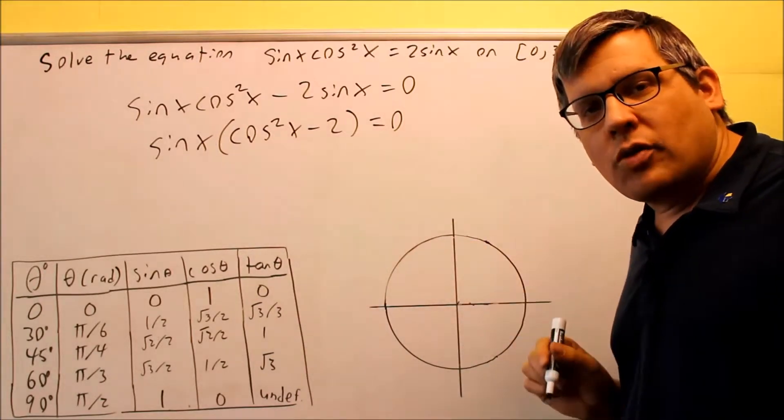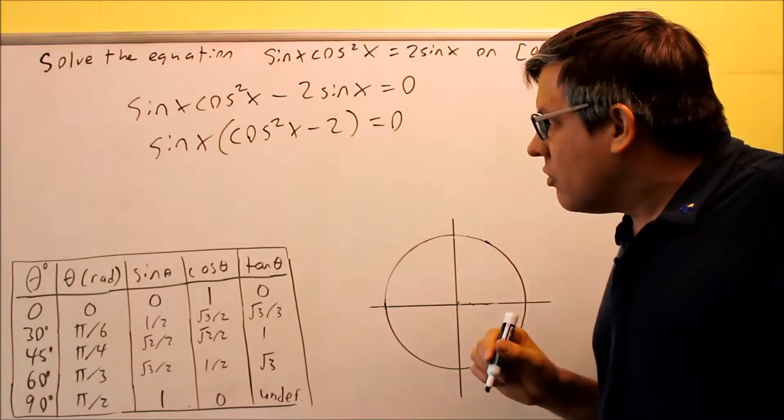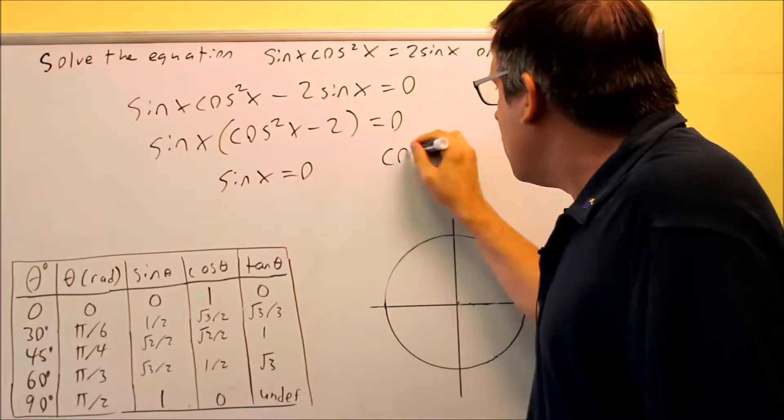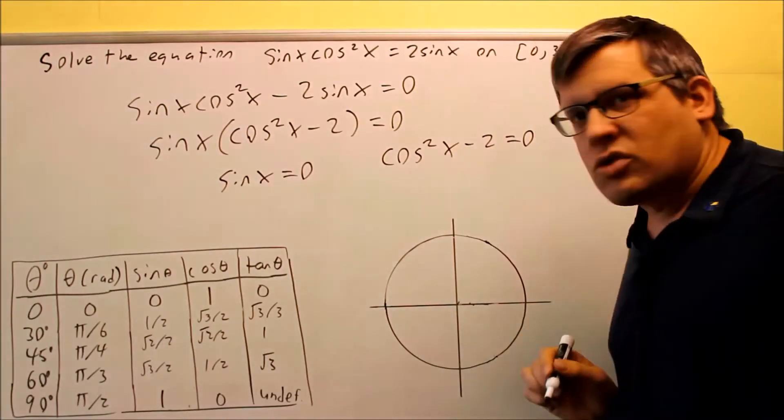Each of these, I want to set both those individually equal to zero. So first I do sine x equals zero, and I do cosine squared x minus 2 equals zero.